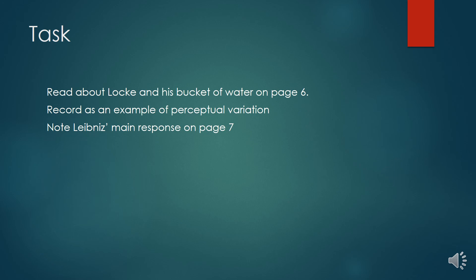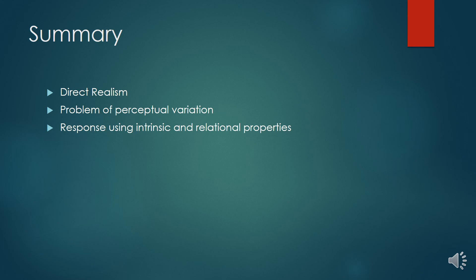I'd like you to look a little bit more at this idea of perceptual variation — there's stuff in the booklet on it, from John Locke and from Leibniz. If you could have a look through and record Locke's Bucket of Water example as a really good example of perceptual variation. So today we've managed to look at and start our theories of perception, focusing on direct realism. Then we started to look at the problems with direct or naive realism by looking at the problem of perceptual variation, with examples from Bertrand Russell and John Locke, and we tried to respond using the idea of an object having intrinsic and relational properties. Next time we're going to be looking at the other problems with direct realism.